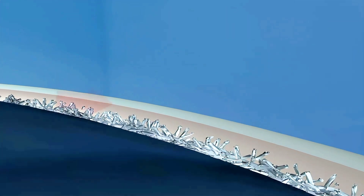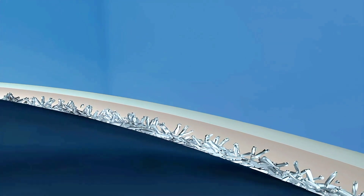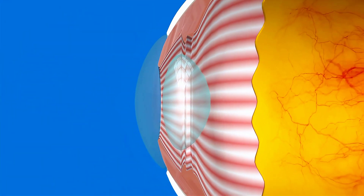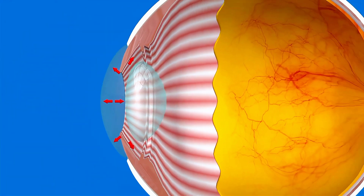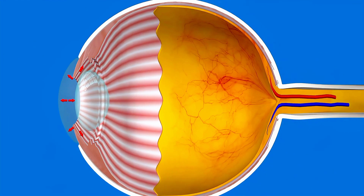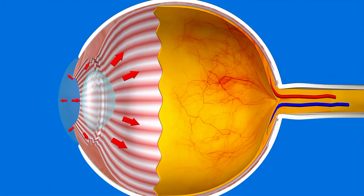Once it reaches the edge of your iris, it leaves the eye through an opening called the trabecular meshwork. In some forms of glaucoma, more fluid can be produced than is removed, leading to an increase in pressure in the anterior chamber.